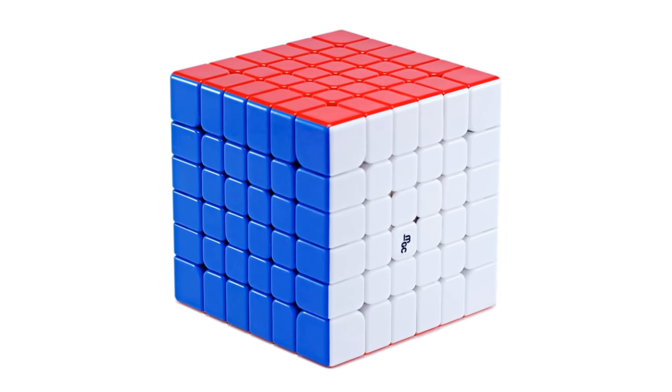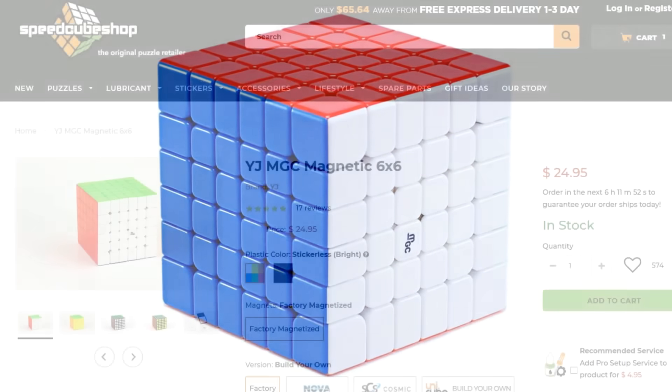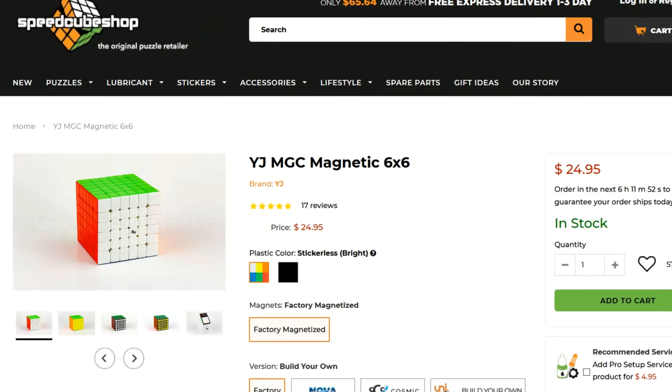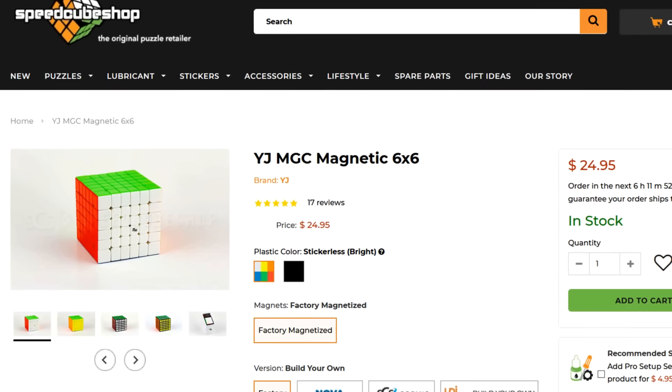So if you want to try an amazing 6x6 for just $25, then you can get the YGM GC from speedcubeshop.com, use the discount code JPERM. But even though speedcubing hardware has come this far, I still get ads for V-Cube.